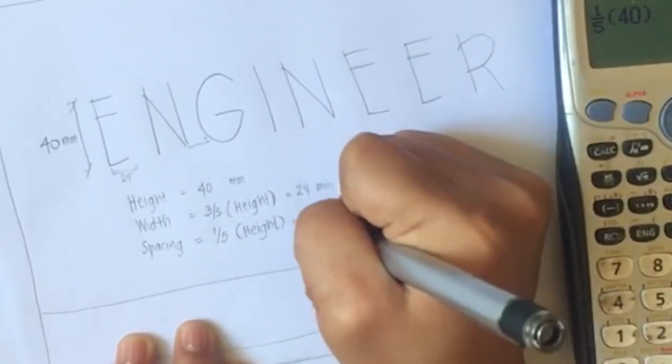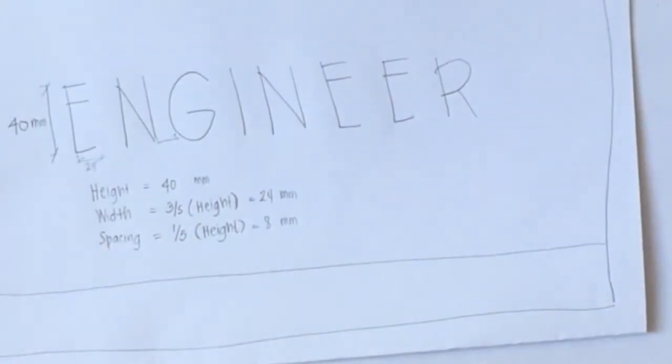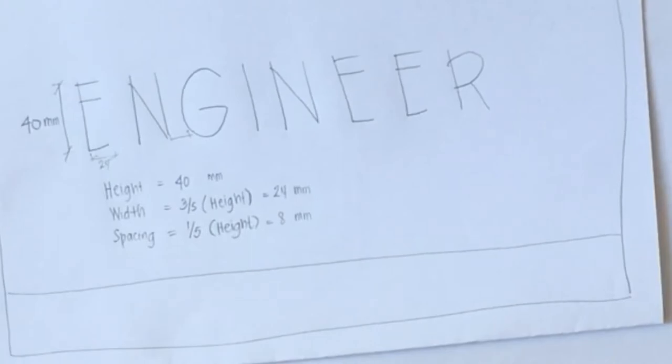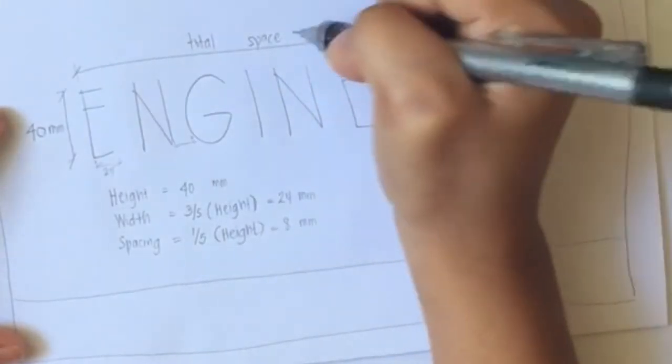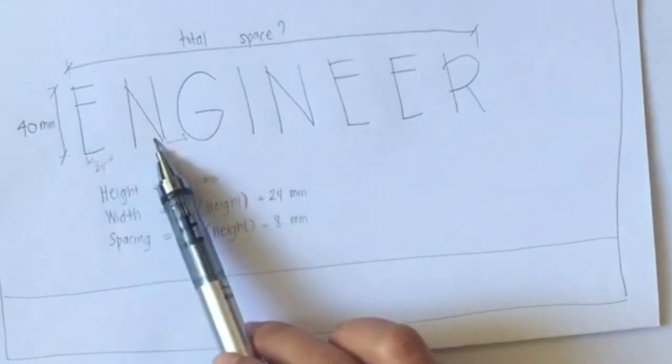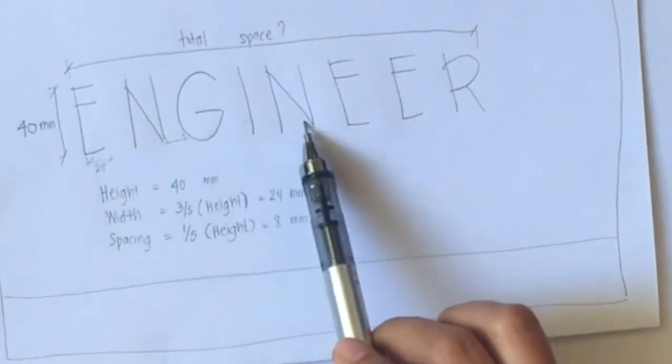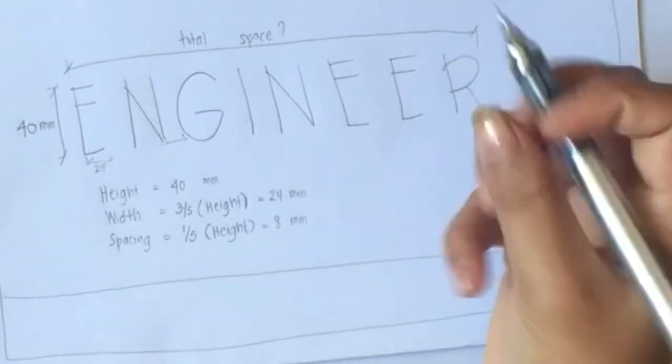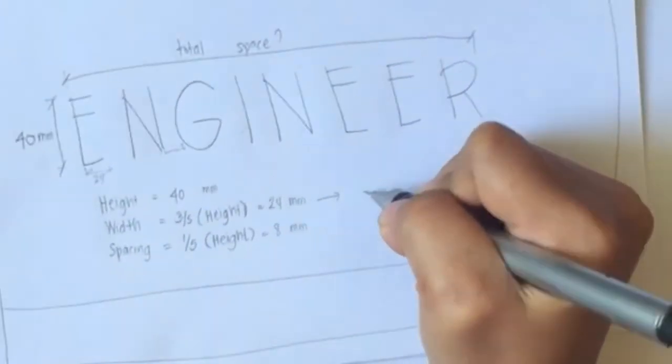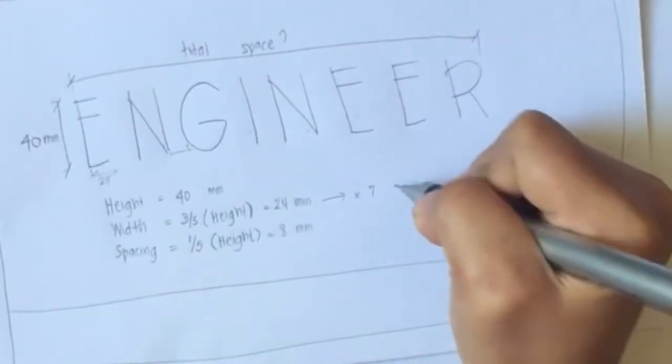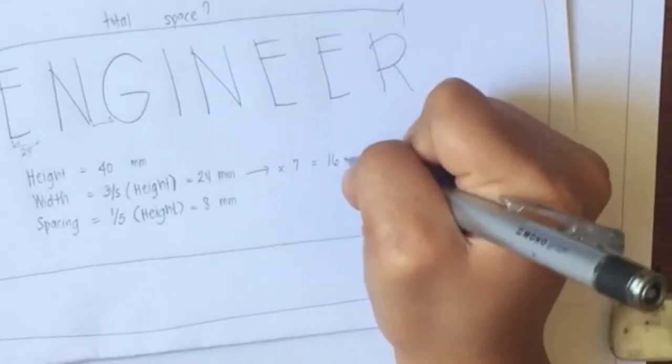These are the dimensions of our letters for each letter. The next thing is that we should count how many letters are there in this word 'engineer.' Let's count. Let's neglect the I because it doesn't get this width, which is 24 millimeters. So let's proceed again: 1, 2, 3, 4, 5, 6, 7. So there are 7 letters. So 24 multiplied by 7, that would be 168 millimeters.